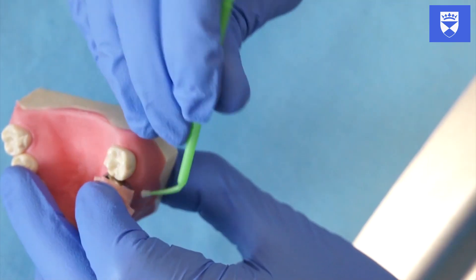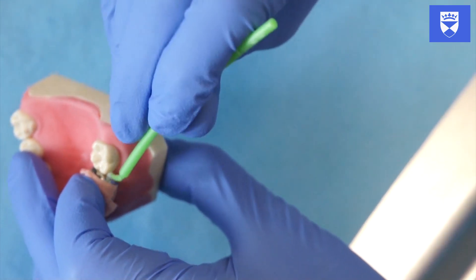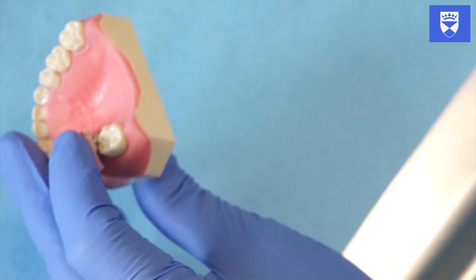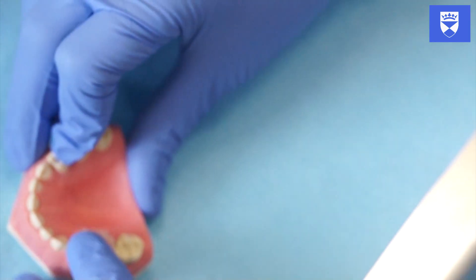Once the crown has been well seated using either of these methods, ask the patient to open their mouth. Wipe away any excess cement with a cotton wool roll, micro brush, or a piece of gauze.